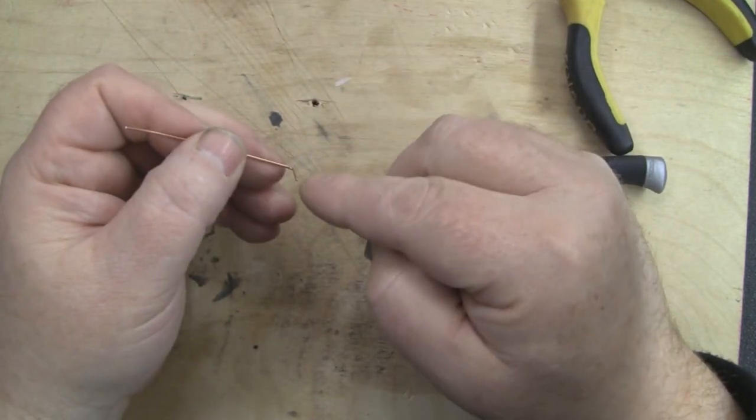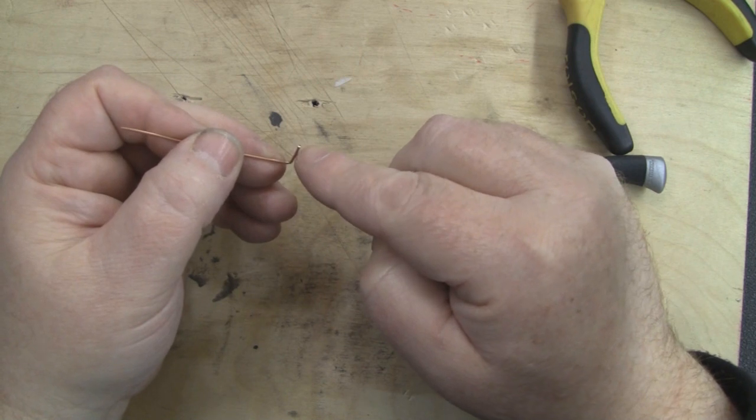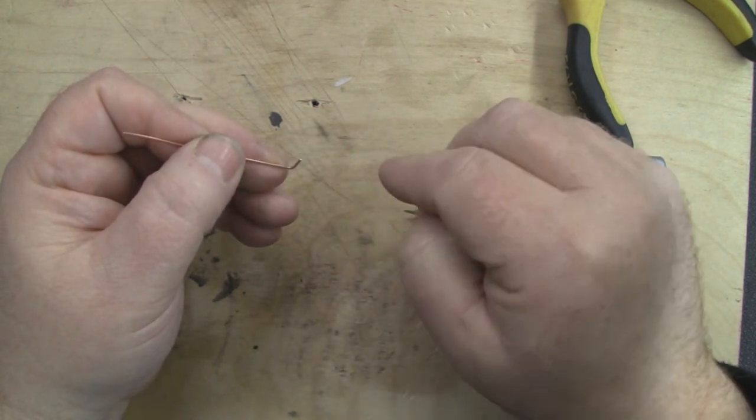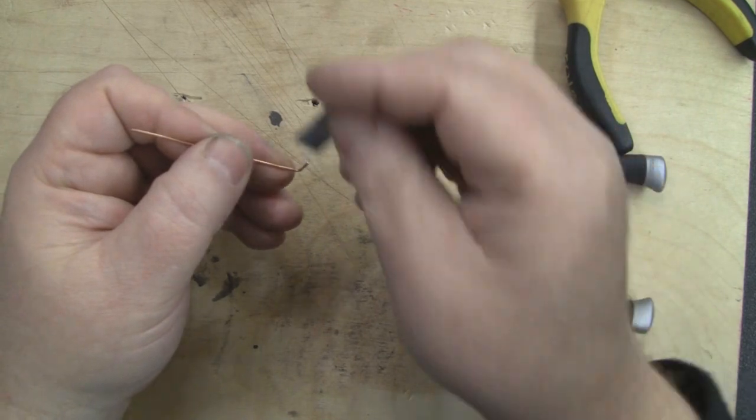What I'm doing is measuring all of this on the inside, so we're taking into account the thickness of this copper wire. On the inside of this antenna is all going to be spot on center frequency.